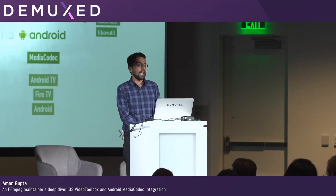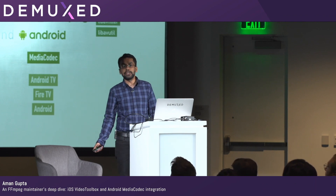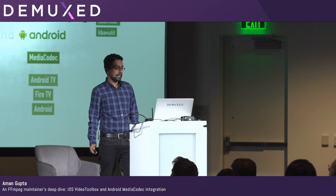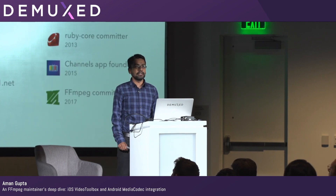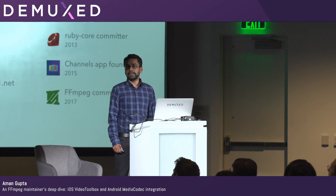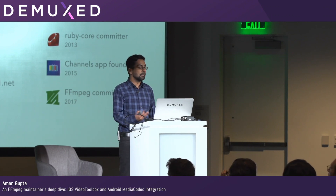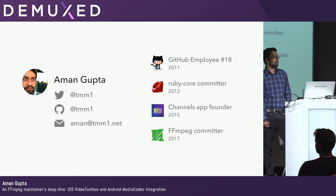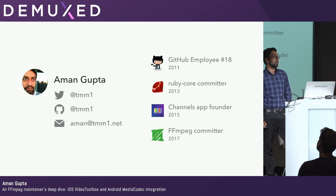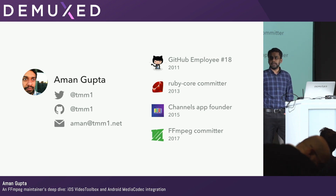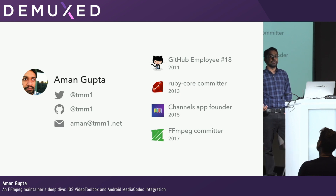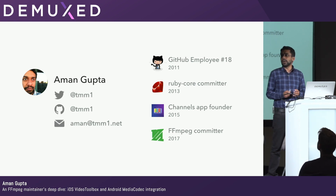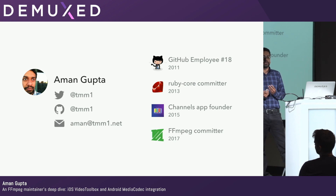I'm going to talk about FFmpeg and specifically how to use it to decode video on iOS and Android platforms. A little bit about me — I'm fairly new to the vid tech scene. My background is more in web development and web operations. I was an early employee at GitHub. I spent a lot of time on the Ruby core team doing performance fixes and GC improvements. Over the past couple of years, my interests have shifted over to multimedia. Last year I became an FFmpeg committer, and I currently am the founder of a small startup. We have an app that runs on all the major streaming platforms — Apple TV, Android TV, Fire TV — and it allows people to do a do-it-yourself live TV DVR using a network-enabled tuner in their home.